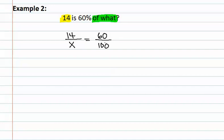We can now solve the proportion by multiplying both sides by the LCD or 100x. We proceed to reduce to clear the fractions. We now have 1400 equals 60x.